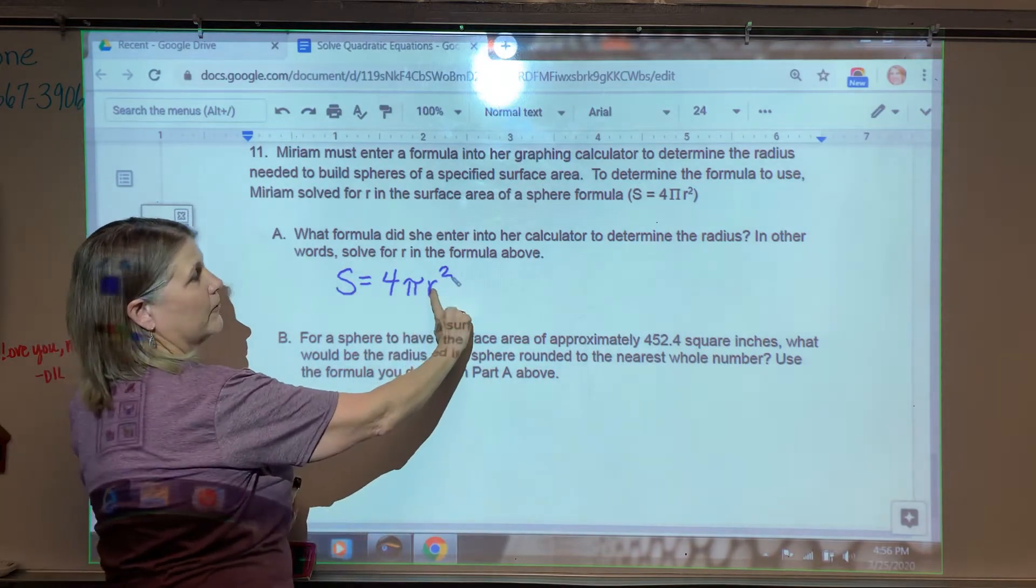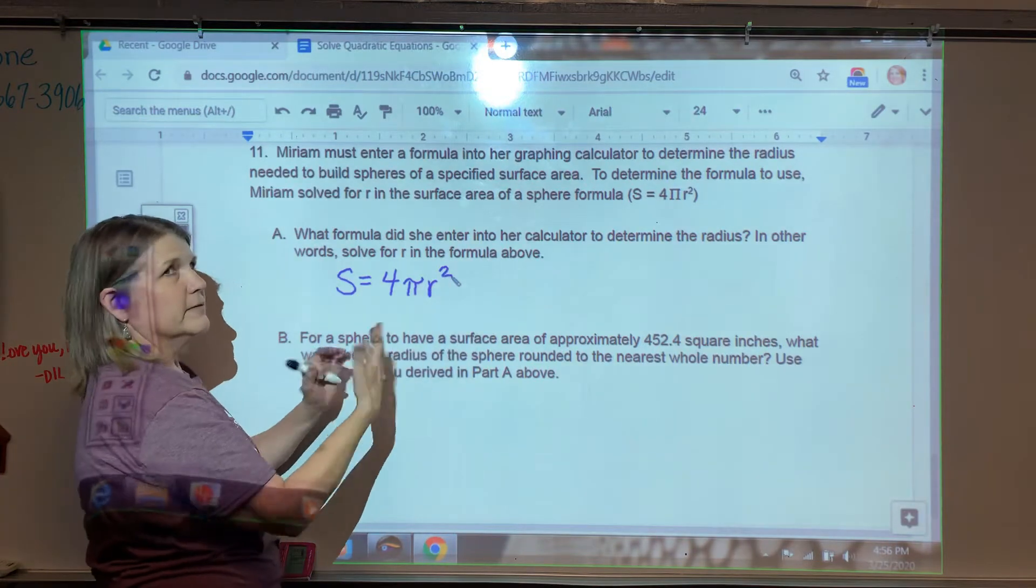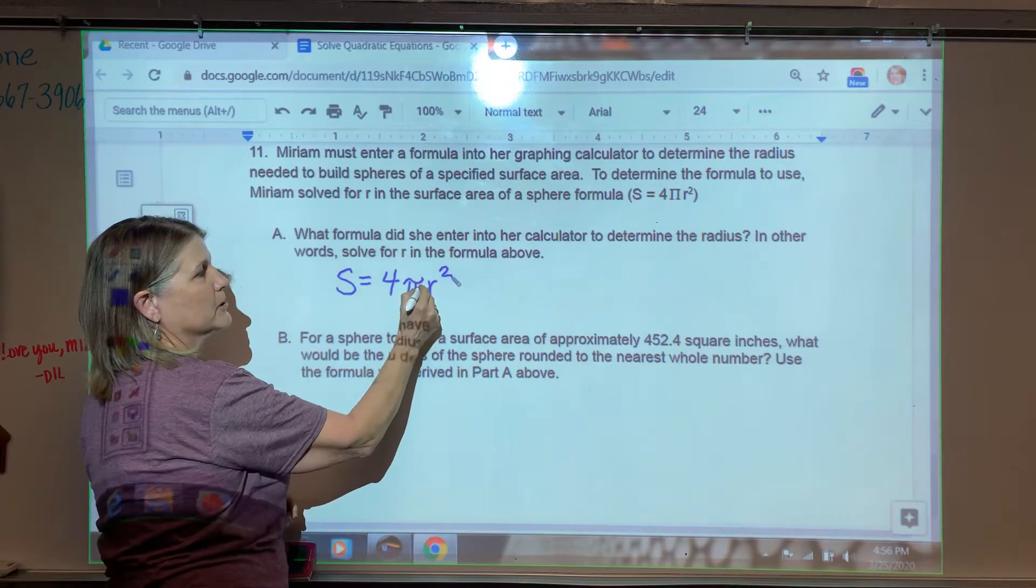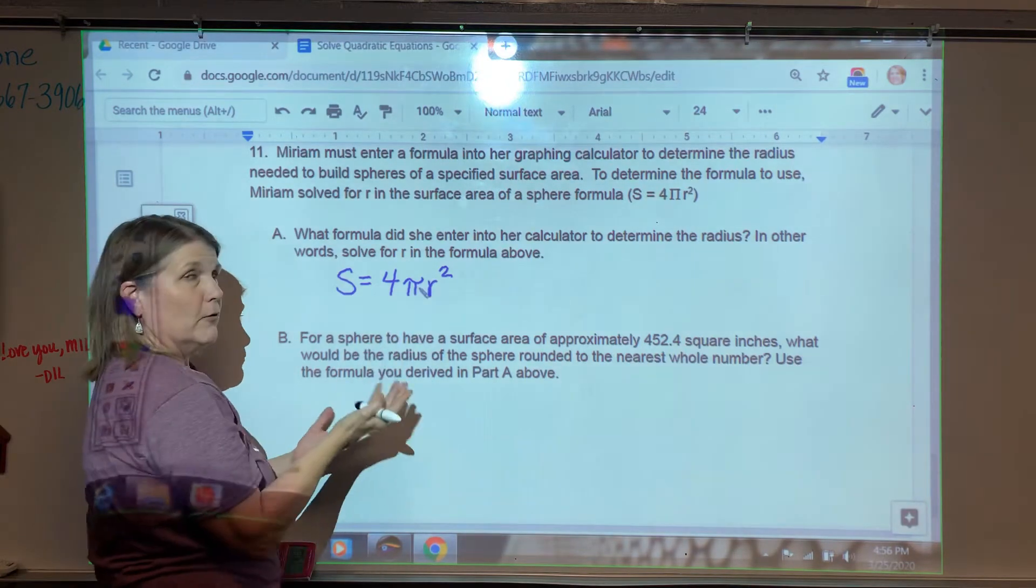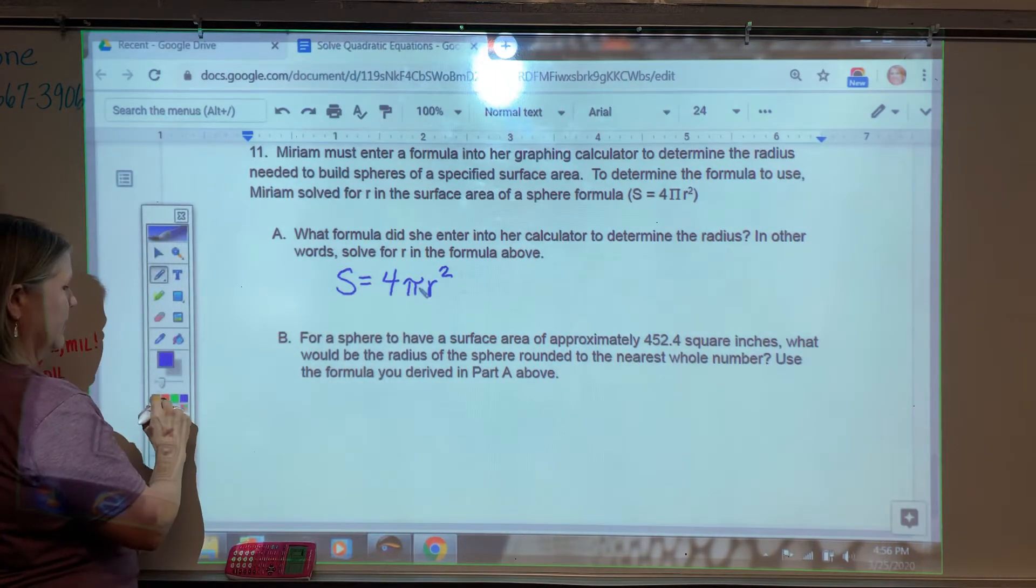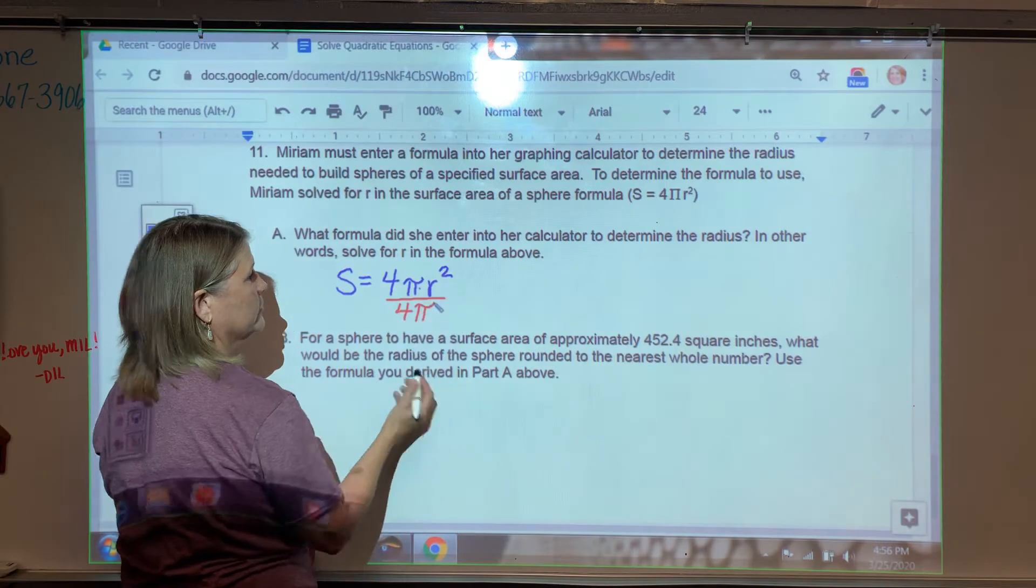So notice, first, I'll just isolate the R squared, and then I can take the square root of both sides. So R squared is really being multiplied by 4 pi, both 4 and pi. And so since they're multiplied by 4 pi, then I can do that by dividing by both the 4 and the pi to start with.